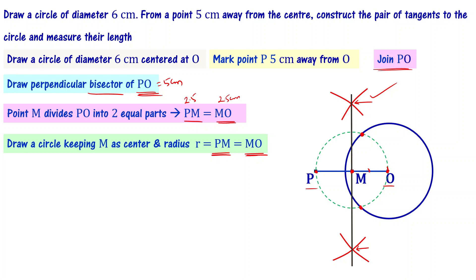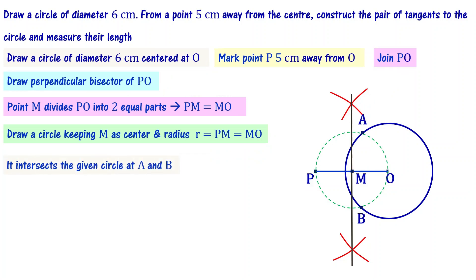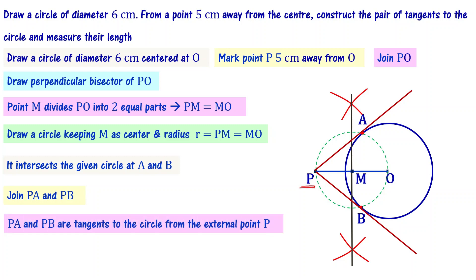The new circle drawn intersects the original circle at two points. Those two points are important — let us mark them and name them A and B. Now connect external point P to point A and draw a line — this is one tangent, PA. Then connect P to B and draw another line — this is the second tangent PB. We now have two tangents PA and PB to the circle from external point P, which is 5 centimeters away from the center, with the diameter of the circle being 6 centimeters.